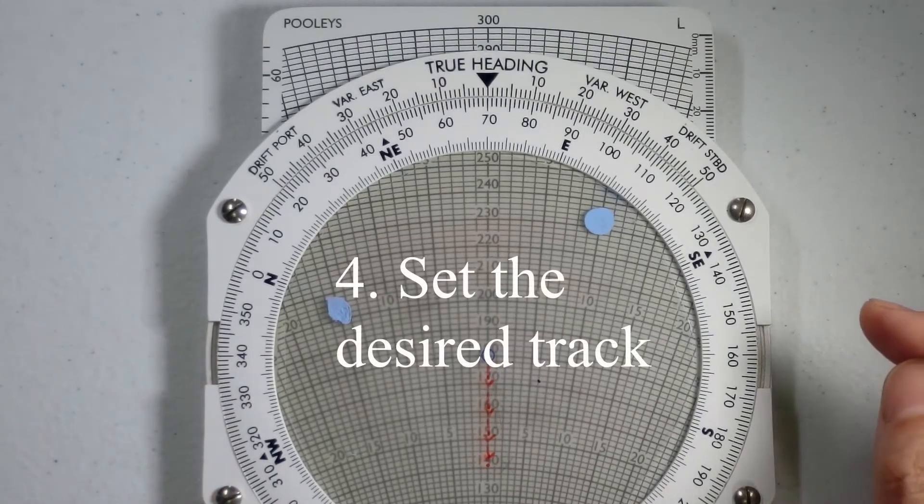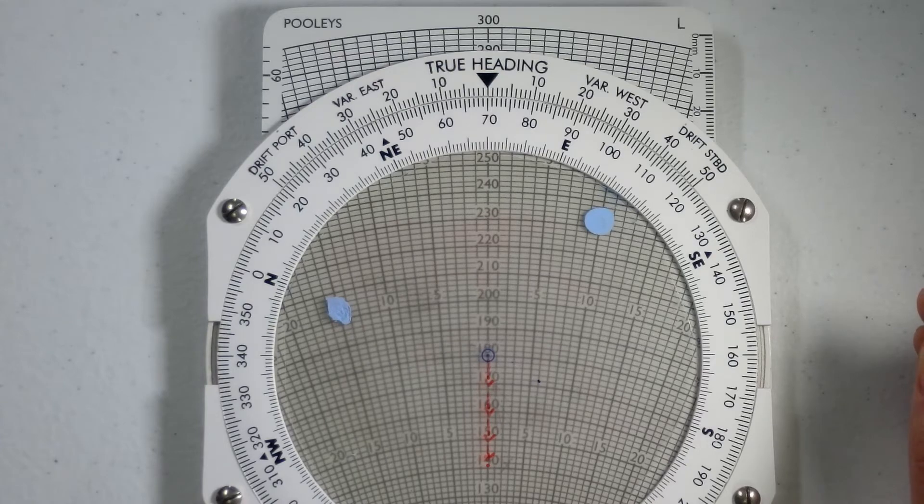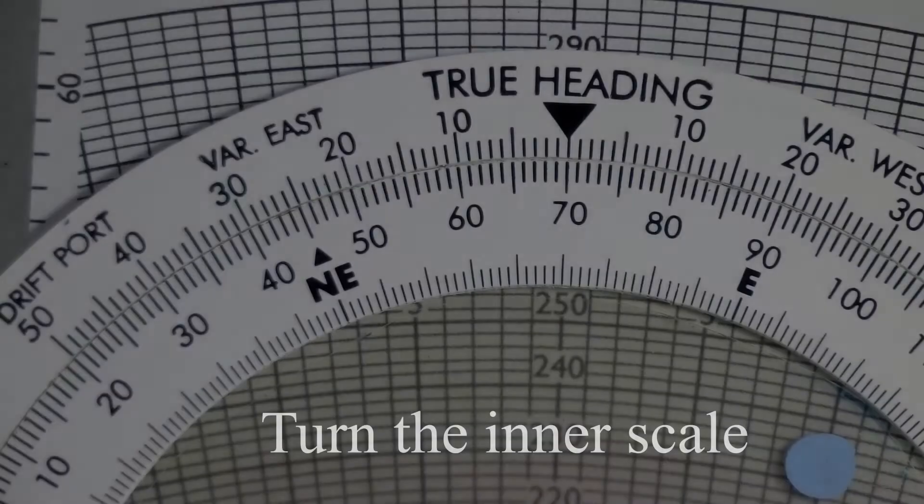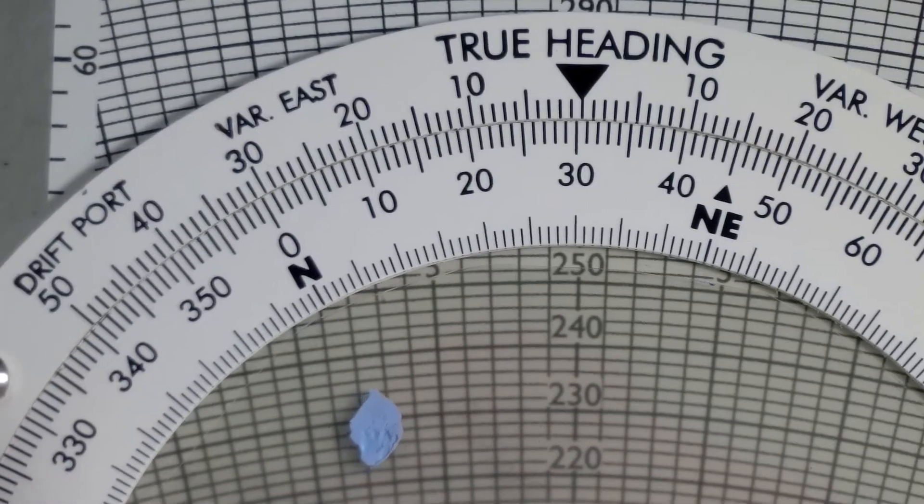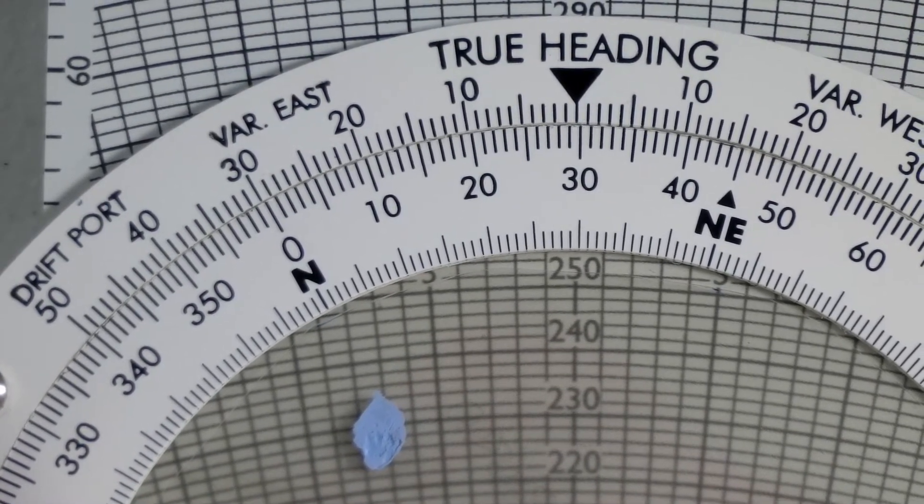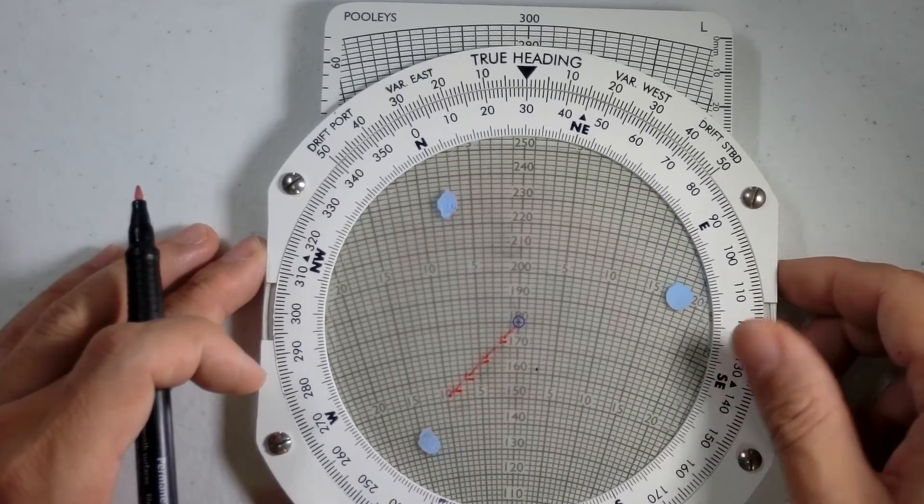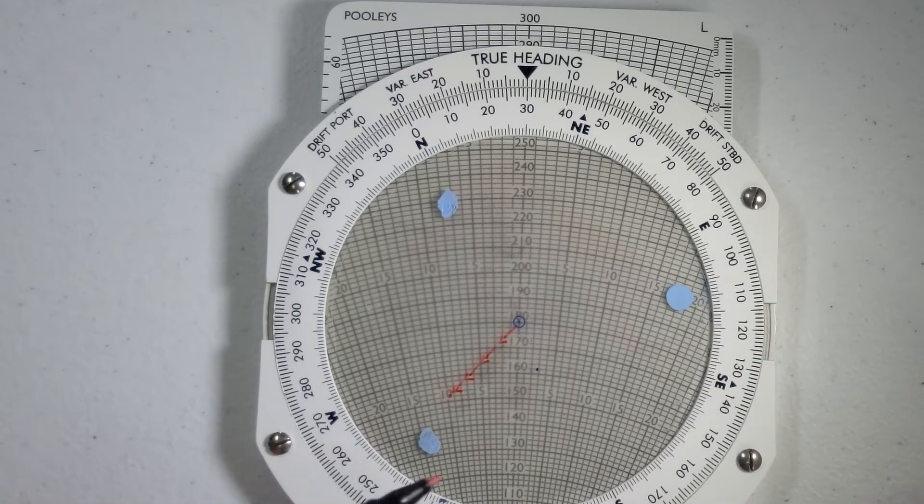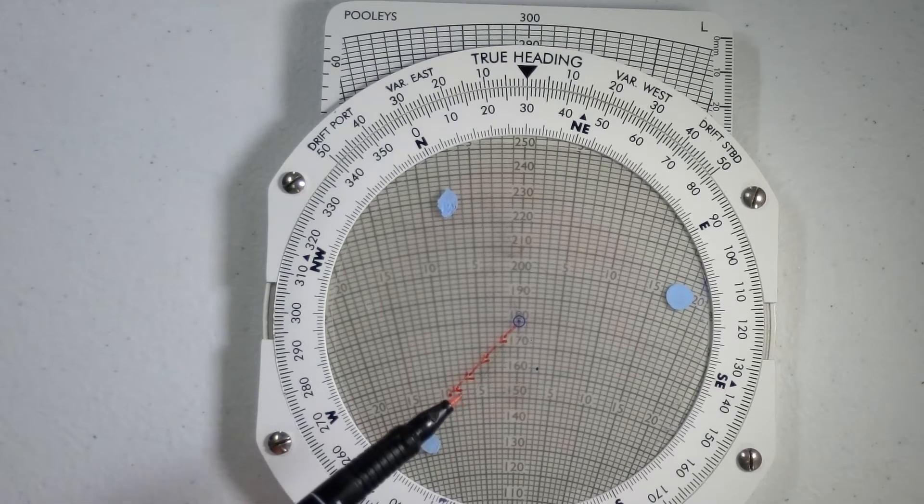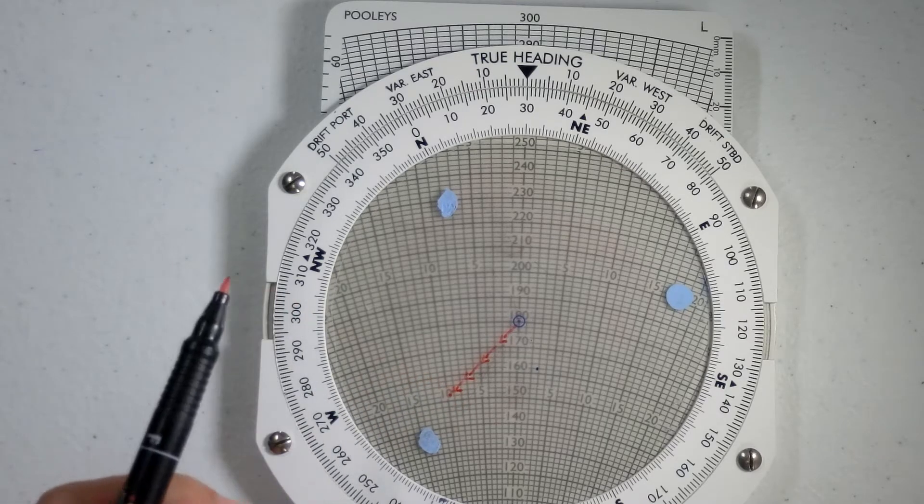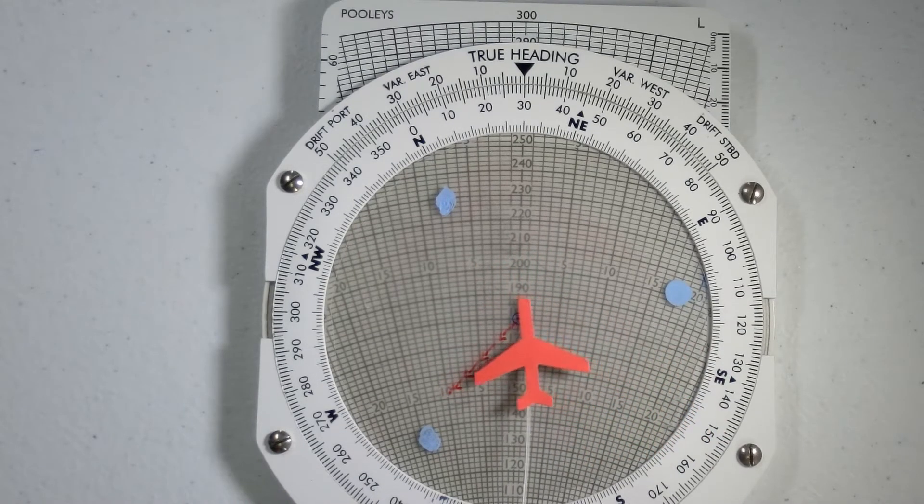Next, I'm going to set our desired track into the CRP. And our desired or required track is 030 degrees true, which is over here. Now, you've noticed that the wind vector has shifted from this position off to the side. And basically, that's telling us that if we were to fly on a heading of 030, then the wind coming from 070 would actually blow us in that direction.